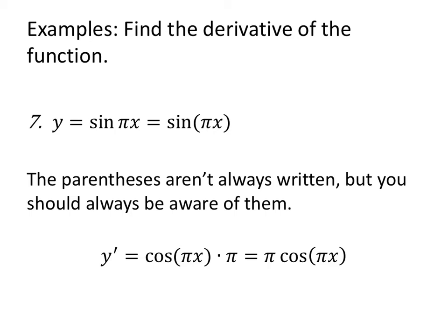Find the derivative of the function. If y equals sine of pi x, there are unwritten parentheses around the argument of the trig function — sine of (pi x). The derivative of sine is cosine, leave the inside pi x alone, then multiply by the derivative of the inside. The derivative of pi x is pi. So: derivative of the outside is cosine, leave the inside alone, times the derivative of the inside. We'll rewrite it so that the coefficient pi doesn't sneak inside the cosine.